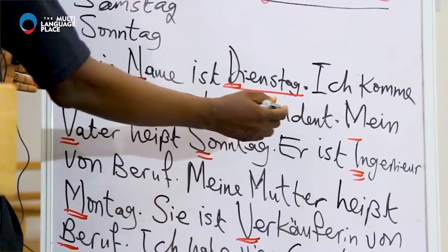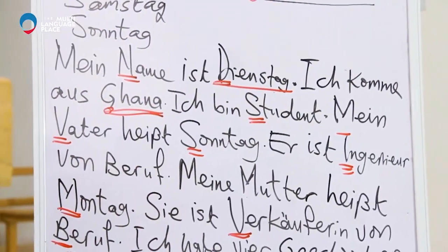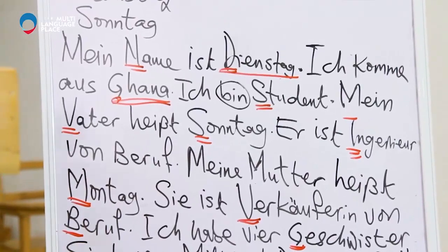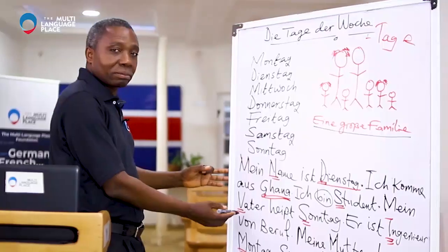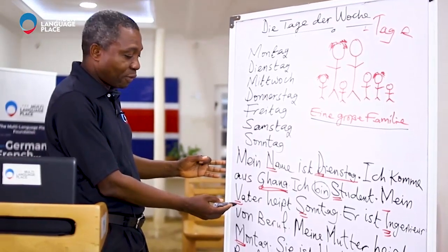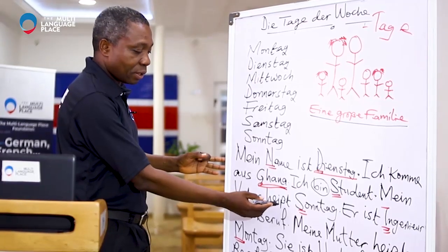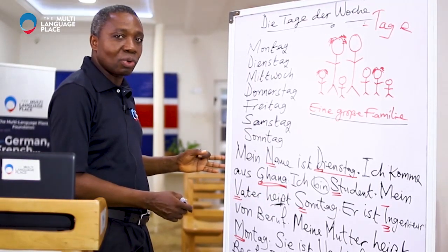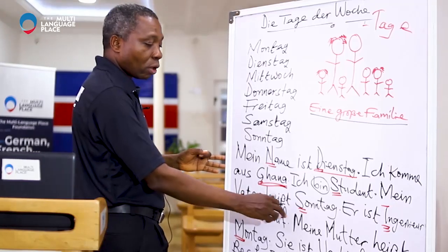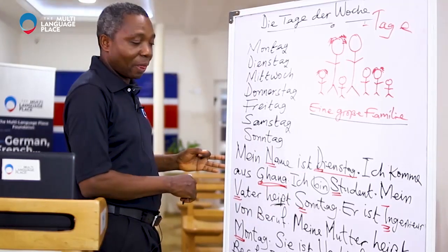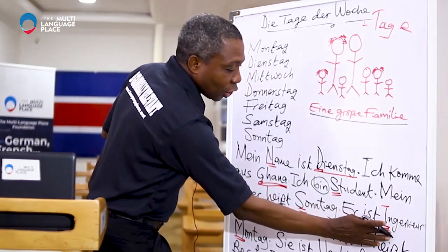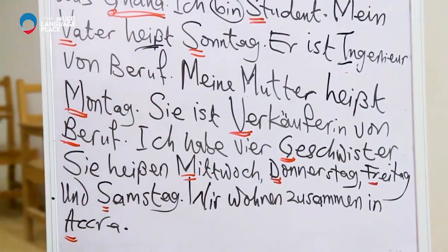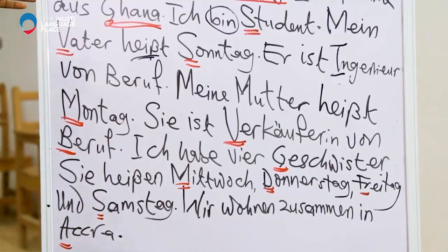Ich bin Student — I am a student. Remember the verb 'sein'. My father — mein Vater heißt — remember the verb 'heißen': Ich heiße, du heißt. My father is called Sonntag. Er ist Ingenieur von Beruf — he is an engineer by profession.